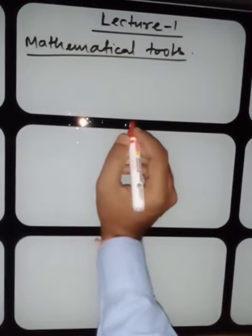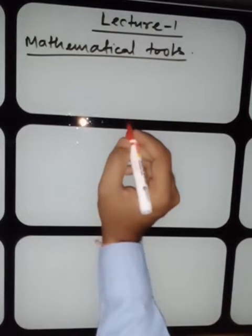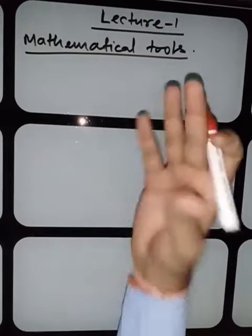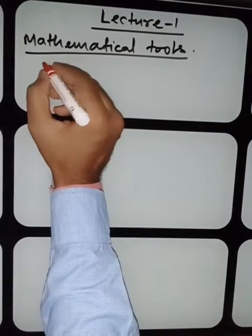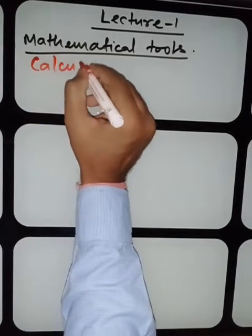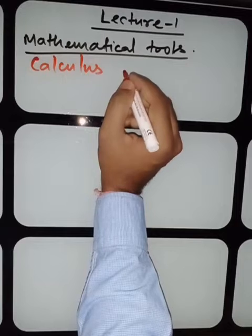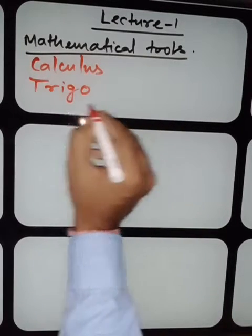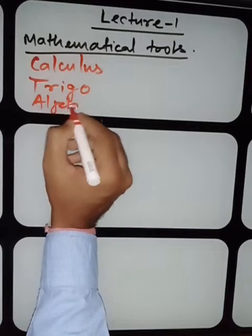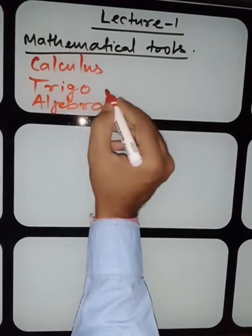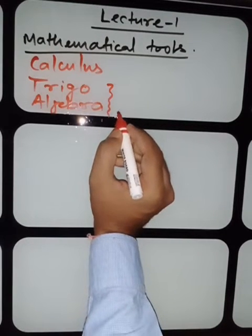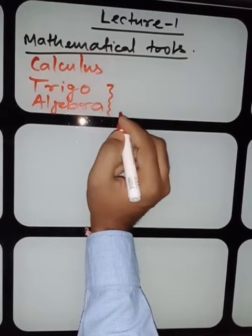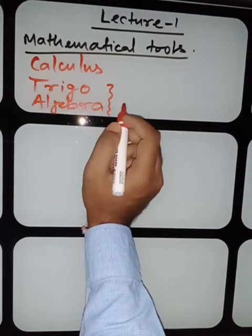In mathematical tools for physics, there are basically three mathematical branches you need to carry. All mathematical branches are important, but the first is calculus, the second is trigonometry, and the third is algebra. For trigonometry and algebra, the concepts are almost at the level of standard 10th with little differences, but calculus you have not studied in standard 10th so far.